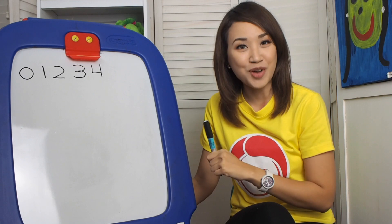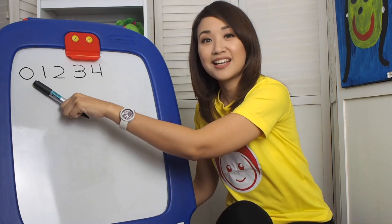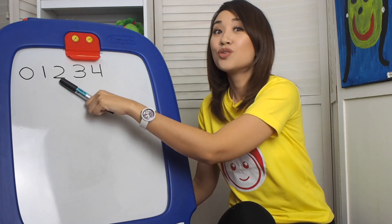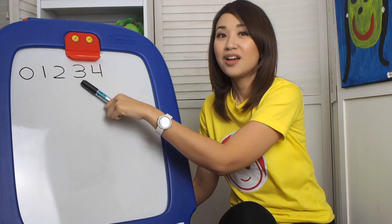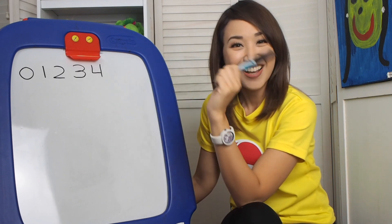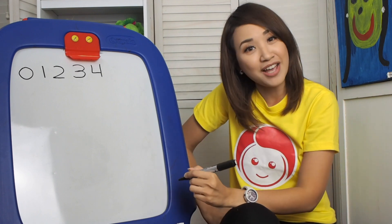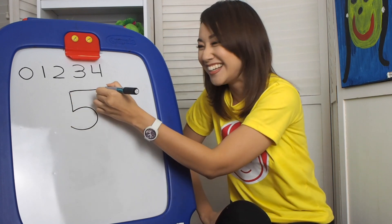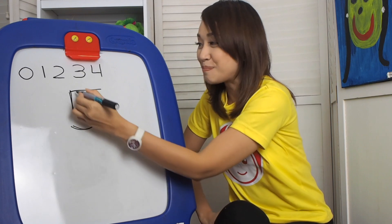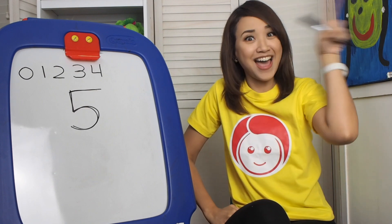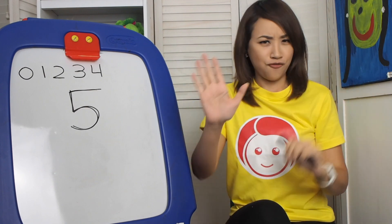Okay, let's review our numbers again. What number is this? Zero. Very good. One, two, three, four. And what is after number four? Let's write number five. So how do we write number five? Down, half circle, and put a hat to make the number five.